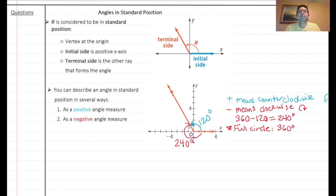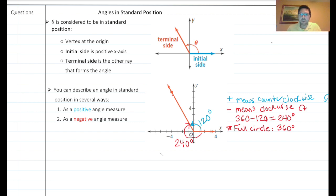Another way is a negative angle measure, which is clockwise. A full circle is 360 degrees, so if one side is 120 degrees, the other side must be 240 degrees, because 360 minus 120 equals 240. That 240-degree clockwise angle is shown in red and is a negative angle — so we write negative 240 degrees.